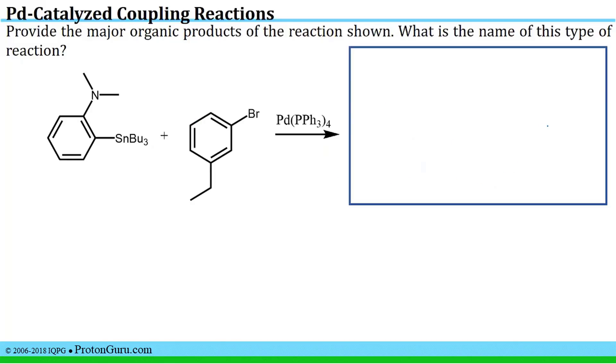Here's another very similar example. We have an organotin species, so you identify that as one of the coupling partners in this case. And then you have of course the bromine that can leave from this carbon.